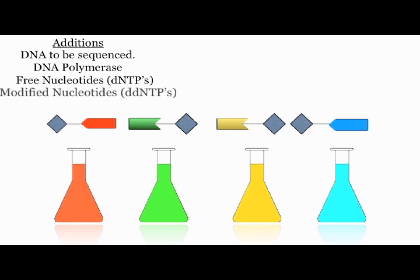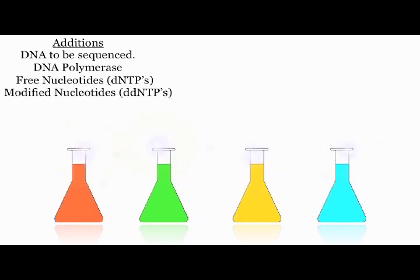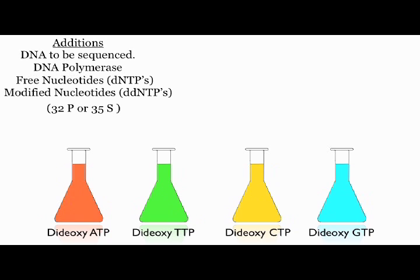Modified nucleotides, or ddNTPs, are then added to the reaction mixtures. Only one type of ddNTP is added to each reaction mixture. Chain termination occurs after the addition of ddNTP due to the fact that there is no OH group available to attack the next dNTP.